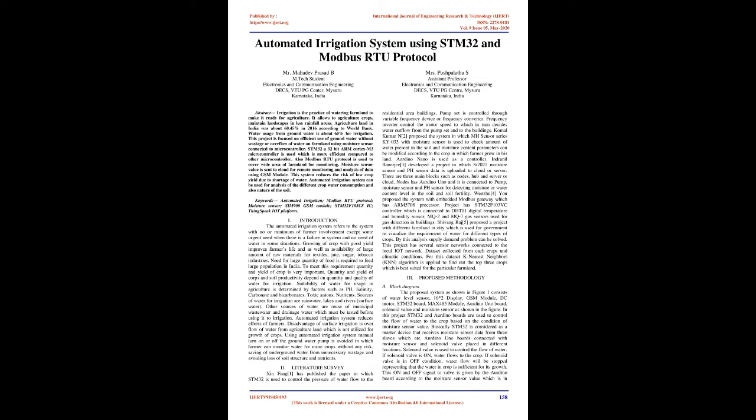Quantity and yield of crops and soil productivity depend on the quantity and quality of water for irrigation. Suitability of water for use in agriculture is determined by factors such as pH, salinity, carbonate and bicarbonates, toxic anions, and nutrients. Sources of water for irrigation include rainwater, lakes and rivers, and surface water.